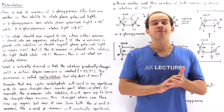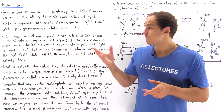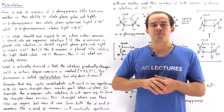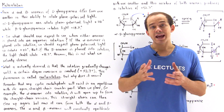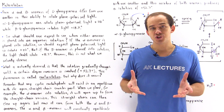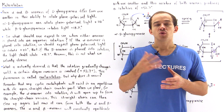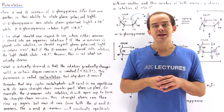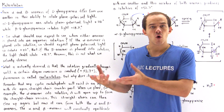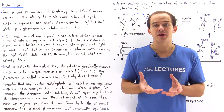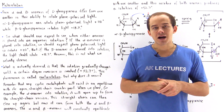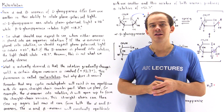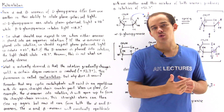So if we take, for example, our alpha anomer and place it into our aqueous mixture, that alpha anomer will unravel — it will break open and form the open straight-chain molecule. That straight-chain molecule can then once again close.